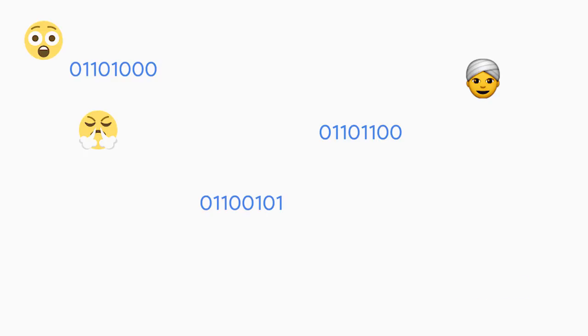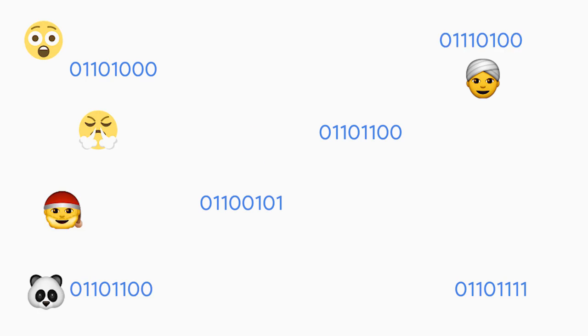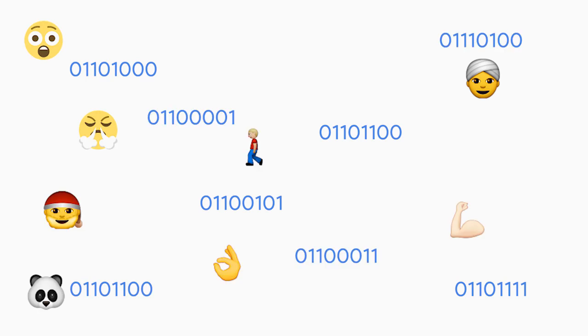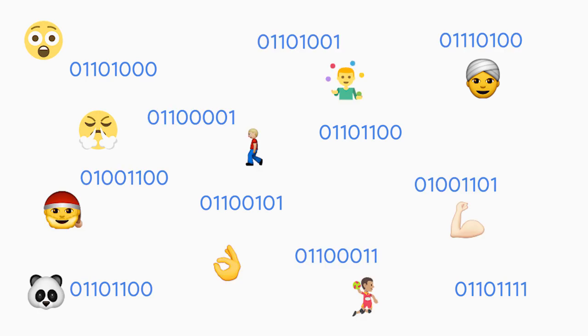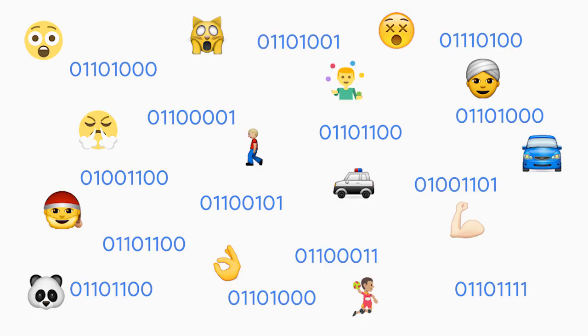Remember from the earlier video that a byte can store only zeros and ones, which means we can have 256 possible values. By the end of this video, you'll learn how we can represent words, numbers, emojis, and more that we see on our screens from only these 256 possible values.